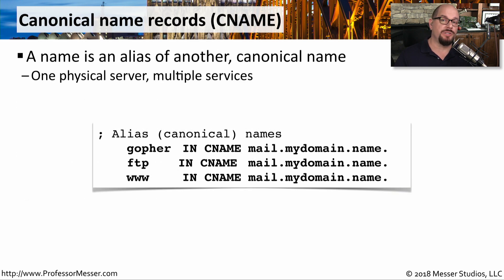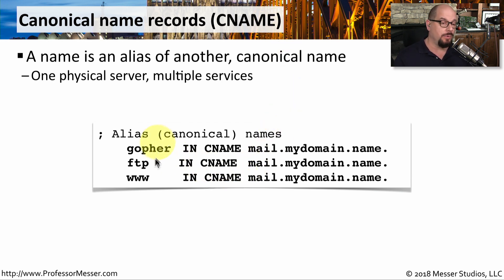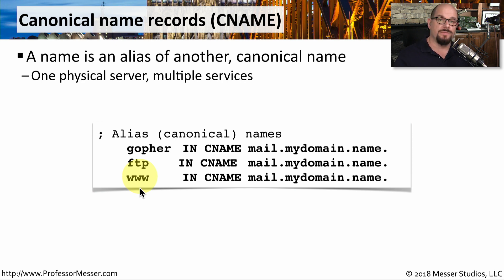There may be times when we want to associate a number of different names with an existing device. In those situations, you may want to use a canonical name record, or a CNAME record. This is where you would add the alias to something that already exists. For example, if you had a device called mail.mydomain.name, you could also call this the FTP server for ftp.mydomain.name, or www.mydomain.name. Your DNS server will recognize that this is a canonical name, associate it with the primary name of this device, and then perform the proper lookup.